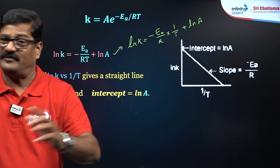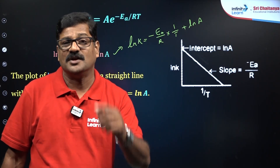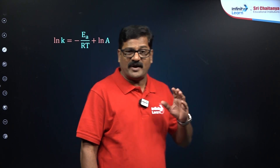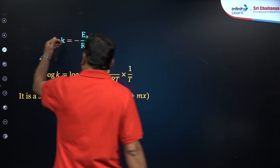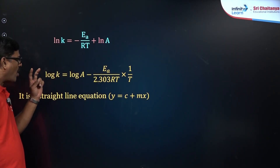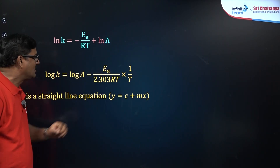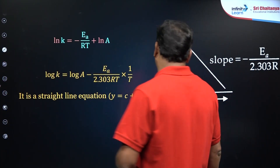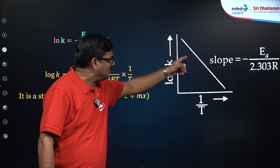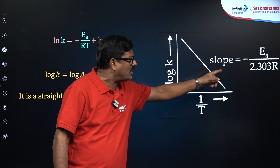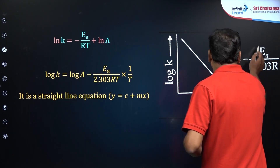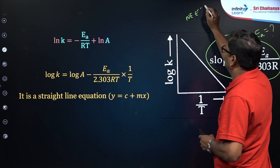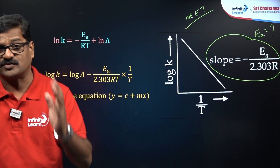Converting to log base 10: log K = log A − Ea/(2.303RT) · (1/T). This is again a straight-line equation when plotting log K versus 1/T, with slope = −Ea/2.303R. This is very important — if the slope is given, you can calculate the activation energy Ea. This type of graph-based and slope-based question is important for both the NEET examination and board examinations.